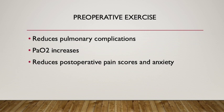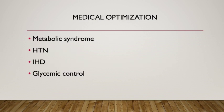Pre-operative exercise is very important — it reduces pulmonary complications, increases PO2, and reduces postoperative pain scores and anxiety. If the patient cannot do physical exercise, at least ask them to do spirometry and respiratory exercises, which will help earlier recovery after surgery, increase PO2, result in smoother extubation, and reduce chances of ICU admission and ventilation in the postoperative period. Medical optimization of conditions like hypertension, IHD, metabolic syndrome, and glycemic control is very important to reduce perioperative complications and reduce the chances of infection and redo surgery.